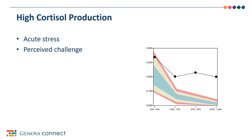When your acute stress is prolonged because it is untreated, it becomes chronic stress. Your body is still secreting high amounts of cortisol, but your cells begin to get numb or deaf to these messages. This can result in fatigue, poor immune health, depression, and other symptoms of HPA axis dysfunction.